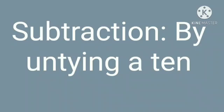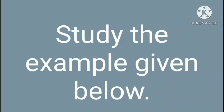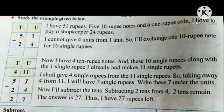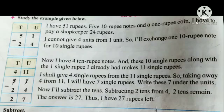Subtraction by untying a 10. Study the example given below. I have 51 rupees — 5 ten-rupee notes and a 1-rupee coin. I have to pay a shopkeeper 24 rupees. I cannot give 4 units from 1 unit, so I will change 1 ten-rupee note for 10 single rupees. Now I have 4 ten-rupee notes, and these 10 single rupees along with the 1 single rupee I already had makes 11 single rupees.